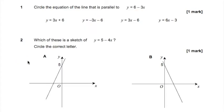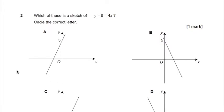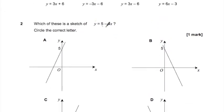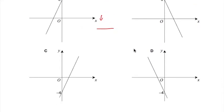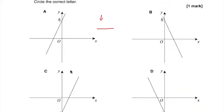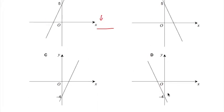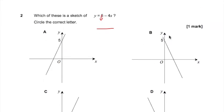Question 2. Which of these is a sketch of y equals 5 minus 4x, circle the correct letter? Okay, so let's think about what this line should look like. So we know it's got to cross the y-axis at 5, because that's our c, our y-intercept, and a gradient of minus 4, so because it's negative, it means it's going to be sloping downwards, and it's going to have to be quite steep if it's a 4. Okay, so if we look straight away, we can see a and c have both got a positive gradient, so it can't be them. So it's got to be b or d. And then we see d has got its y-intercept is minus 4, whereas b is the only one where it's 5. So this is the only one with a negative gradient and a y-intercept of 5, so that's got to be our answer.